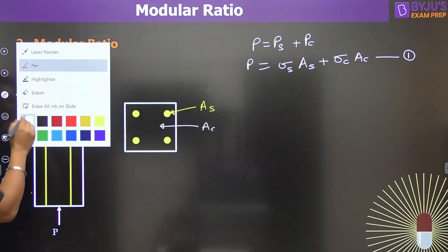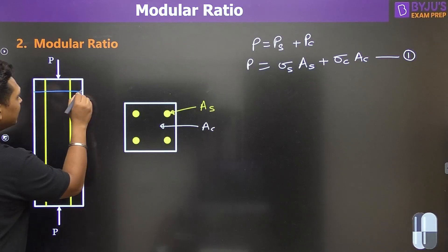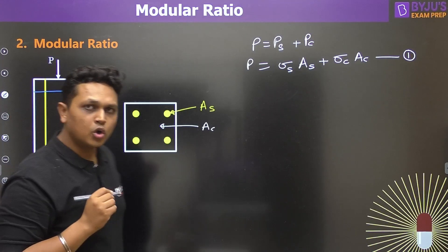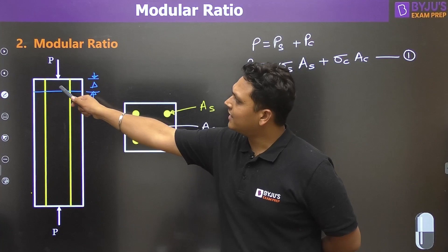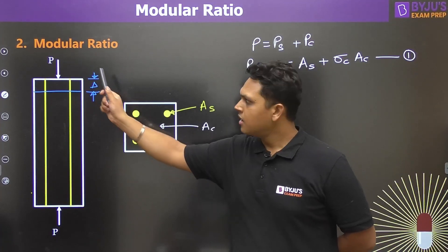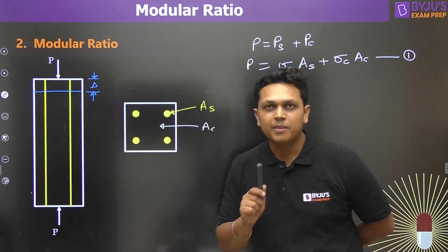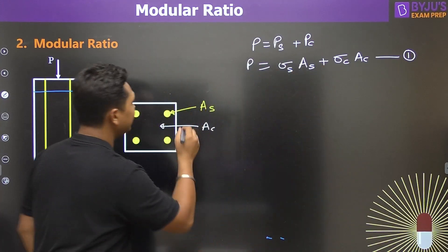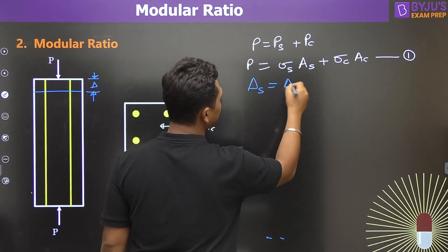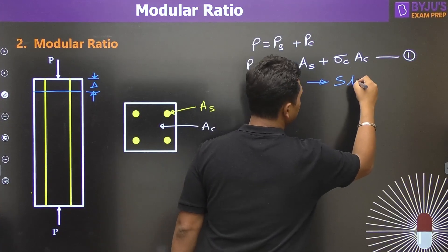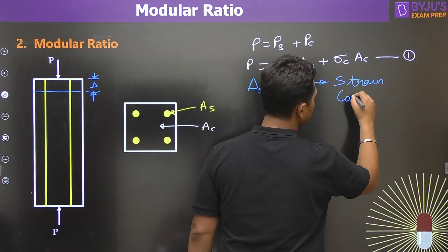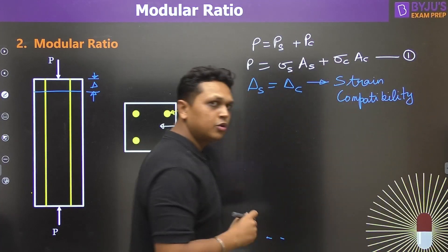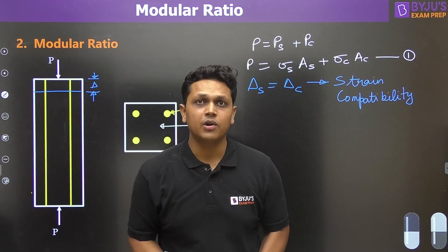Due to load P, the element deforms by some amount delta. Both concrete and steel are deforming by the same amount, which means there is strain compatibility between both materials. This implies that deflection in steel equals deflection in concrete — both behave as a single unit, which is why they are referred to as a composite material.